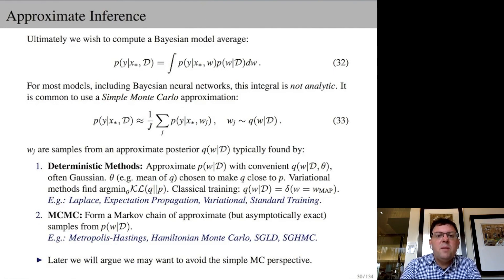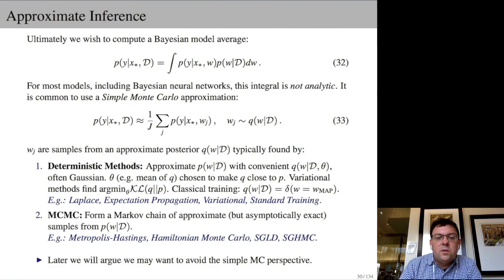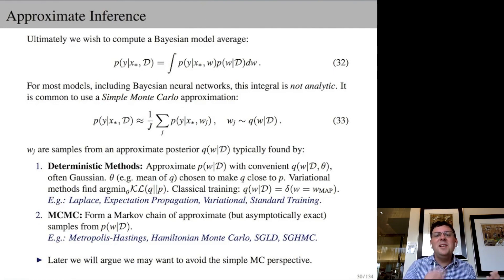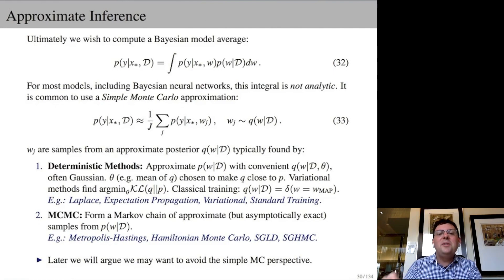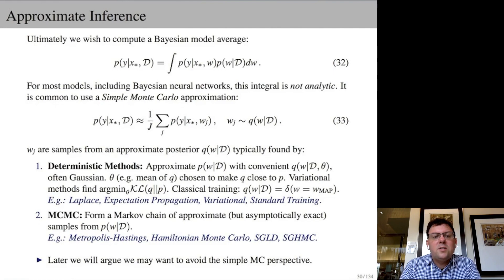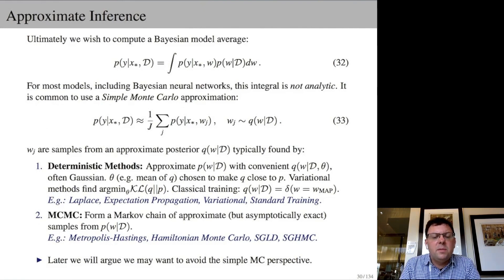Ultimately, we wish to compute a Bayesian model average — our unconditional predictive distribution P(y|data) — rather than our conditional predictive distribution P(y|w). This is equal to the integral of our conditional predictive distribution times our posterior P(w|data). Rather than use a single setting of parameters, we want to use all possible settings weighted by their posterior probabilities — especially impactful in deep learning where posteriors are highly diffuse and contain different settings corresponding to a variety of compelling and different solutions. For most models, including Bayesian neural nets, this integral is not analytic. It's common to use a simple Monte Carlo approximation, averaging conditional predictive distributions for different settings of parameters sampled from an approximate posterior Q(w|data).